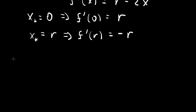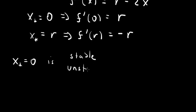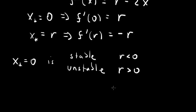For x-star equals zero: the derivative at this fixed point is r, so it is stable when r is less than zero, and unstable when r is greater than zero. It changes its stability as r crosses zero, going from stable to unstable.